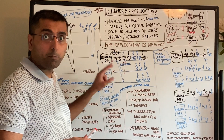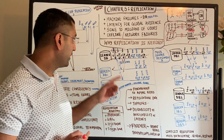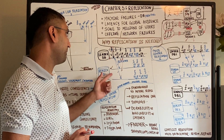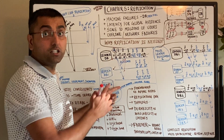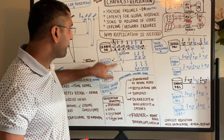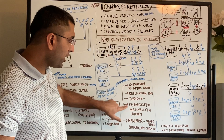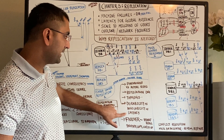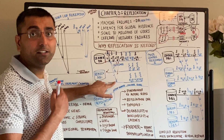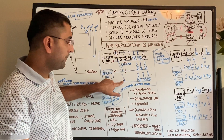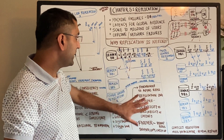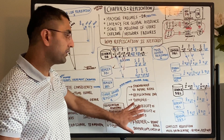Replication topology defines how data flows — who is responsible for replication. Is the leader responsible to replicate to all replicas, or do replicas then replicate to other replicas? The trade-off is between durability, availability, and latency. If you wait for all replicas to receive the write, you get high durability but at the expense of lower availability and higher latency. All of these configurations are important to keep in mind.